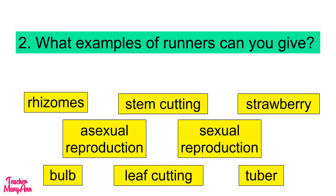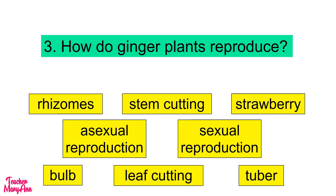Question number 2: What examples of runners can you give? The correct answer is strawberry. Next, how do ginger plants reproduce? Ginger plants reproduce through rhizomes.